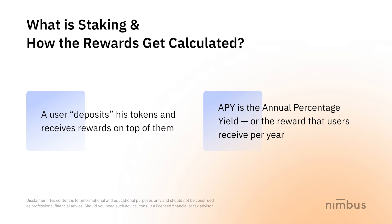First, let us remind you what staking is and how the rewards get calculated. Staking is the process by which you transfer your tokens to the blockchain in exchange for rewards in the form of new tokens. In simple words, you deposit your tokens and receive rewards on top of them. The reward size is defined by the APY indicator — the annual percentage yield, or rewards that users receive per year on their staked tokens.